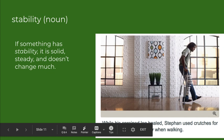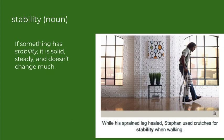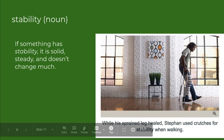The next word is stability. It's a noun. If something has stability, it is solid, steady, and doesn't change much. Our sentence that goes along with the picture is: while his sprained leg healed, Stefan used crutches for stability when walking. I've had to use crutches before — sometimes they give you stability and sometimes they don't.